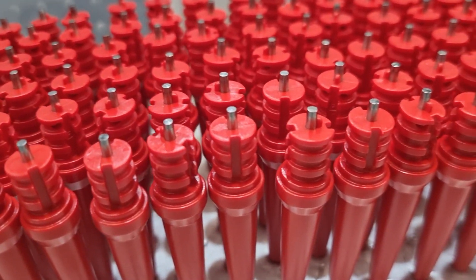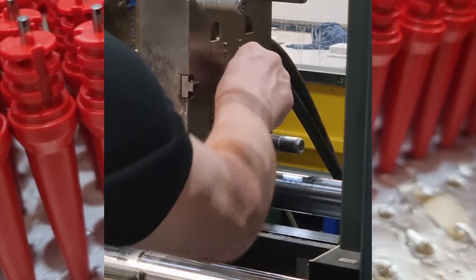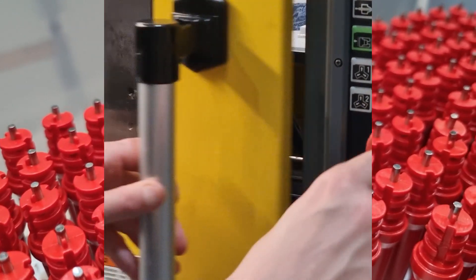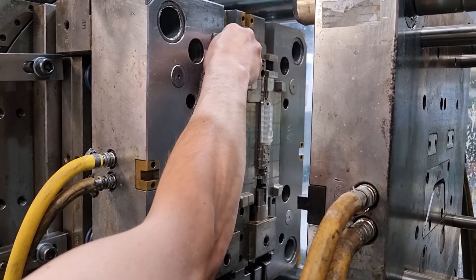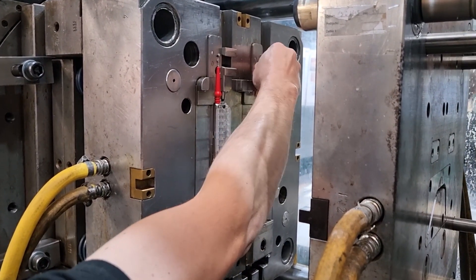Similar to overmold tools are insert molds. There isn't much difference between the two designs, the main difference being that insert molds are designed to fit a part that isn't plastic, like a circuit board or a metal insert. These types of tools don't require the purchase of multiple tools, and therefore cost less than their overmold counterparts.